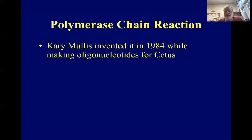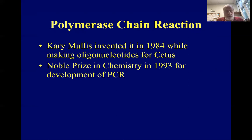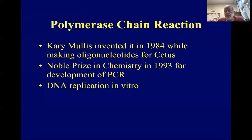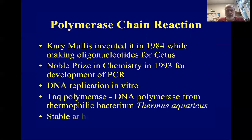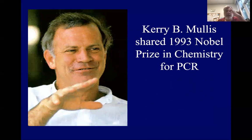The polymerase chain reaction, or PCR, was invented in 1984 by Cary Mullis, who was born in North Carolina and went to high school in Columbia, South Carolina. He went to California for his PhD in biochemistry. PCR is essentially DNA replication in a tube. It utilizes a heat-resistant form of DNA polymerase from the bacterium Thermus aquaticus, which lives in hot springs. The enzyme isn't destroyed by heating at high temperatures. Mullis received the Nobel Prize for this in 1993.